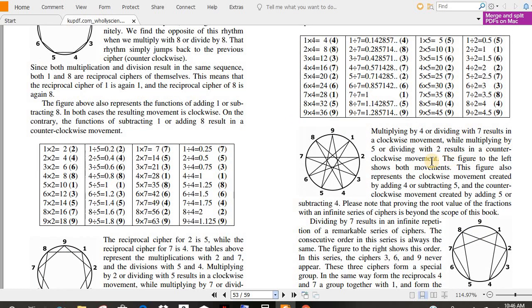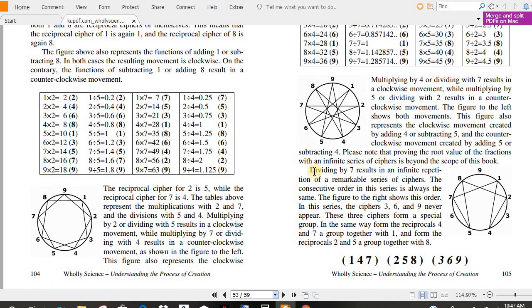Multiplying by four or dividing by seven results in a clockwise movement, while multiplying by five or dividing with two results in a counterclockwise movement. The figure to the left shows both movements. The figure also represents the clockwise movement created by adding four, subtracting five, and the counterclockwise movement created by adding five or subtracting four. Please note that proving the root value of the fractions with an infinite series of ciphers is beyond the scope of this course. Dividing by seven results in an infinite repetition of a remarkable series of ciphers. The consecutive order in this series is always the same. The figure to the right shows this order. In the series, the ciphers three, six, nine never appear.